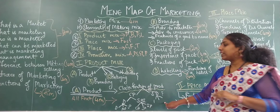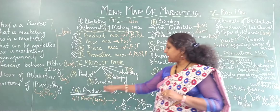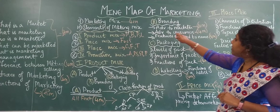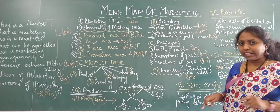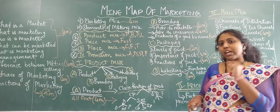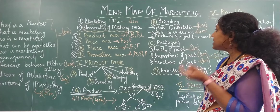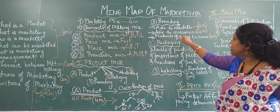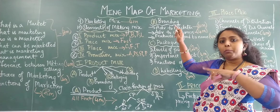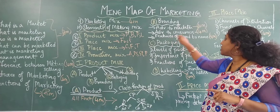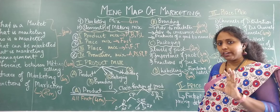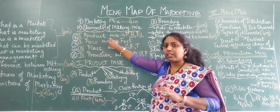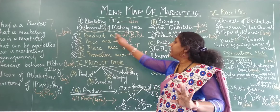The second thing that comes under product mix is branding, written as B. Under branding, you have: advantages of branding to the marketer, which comes as a four marker; advantages of branding to the consumer, also a four marker; both together come as an eight marker. Features of a good brand also usually comes as a four marker. Please learn everything below branding — branding comes under product mix.